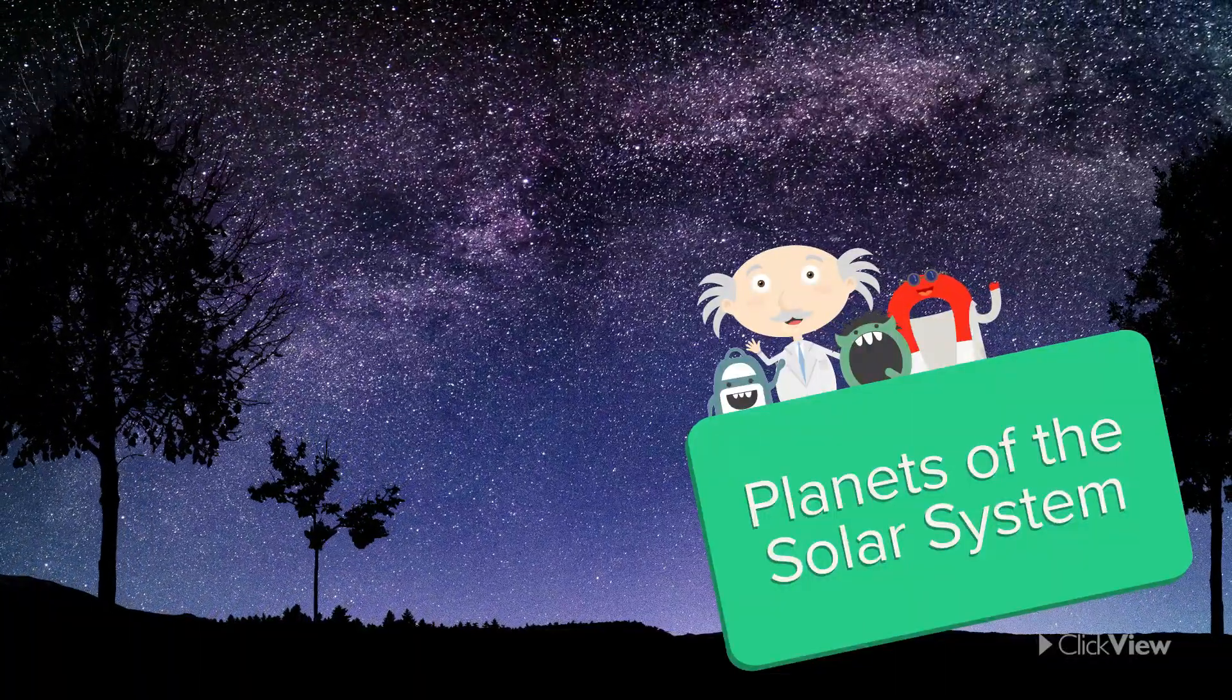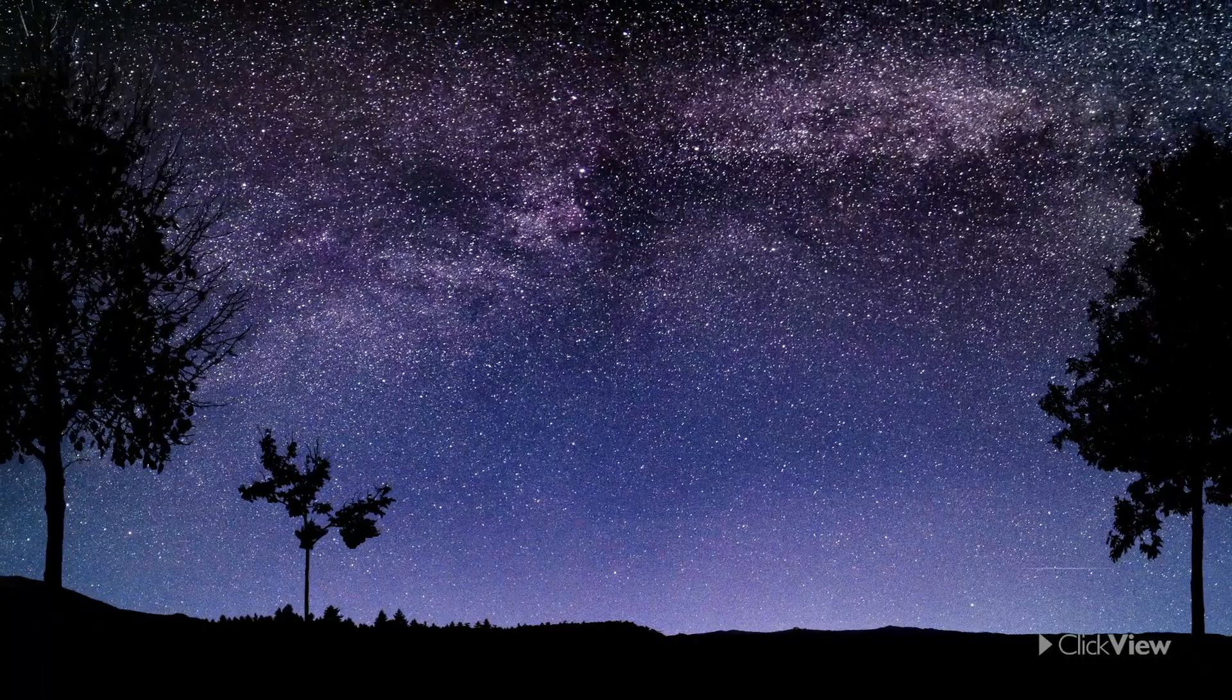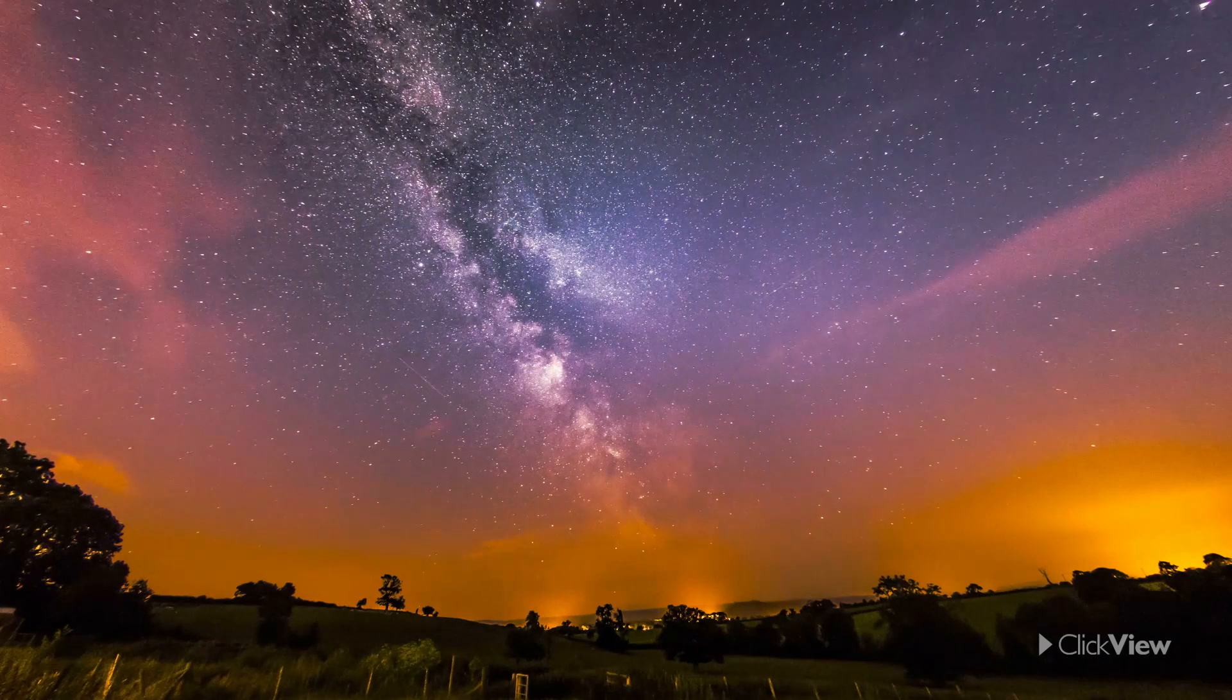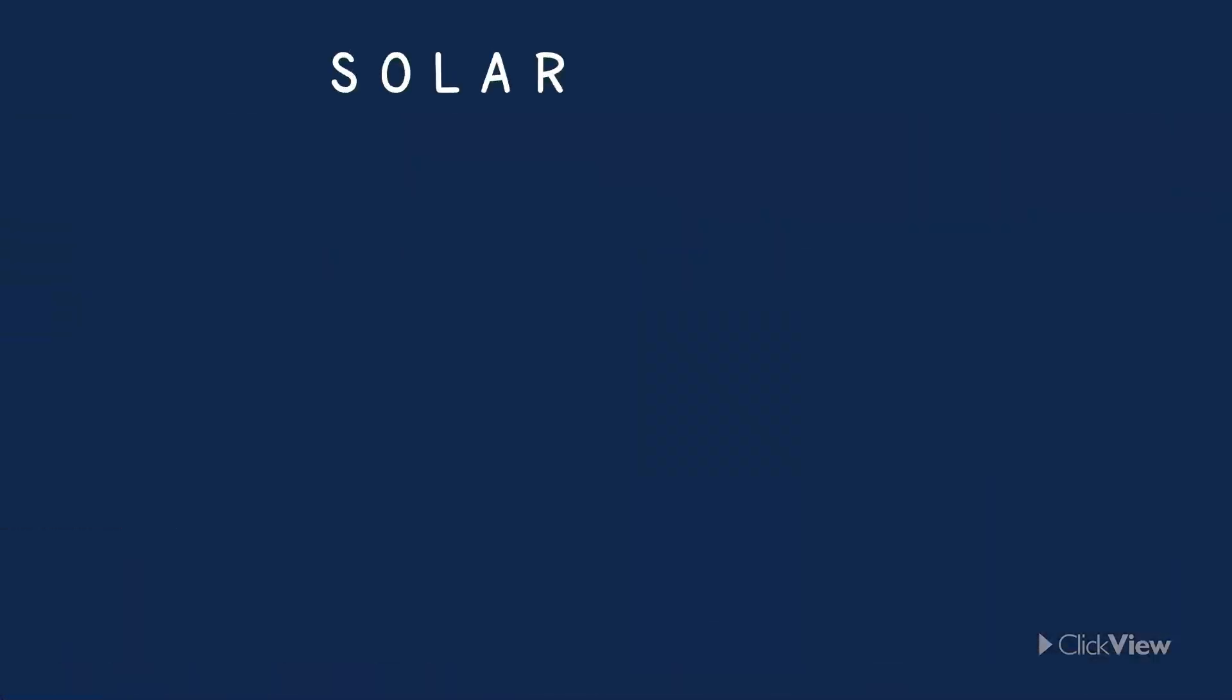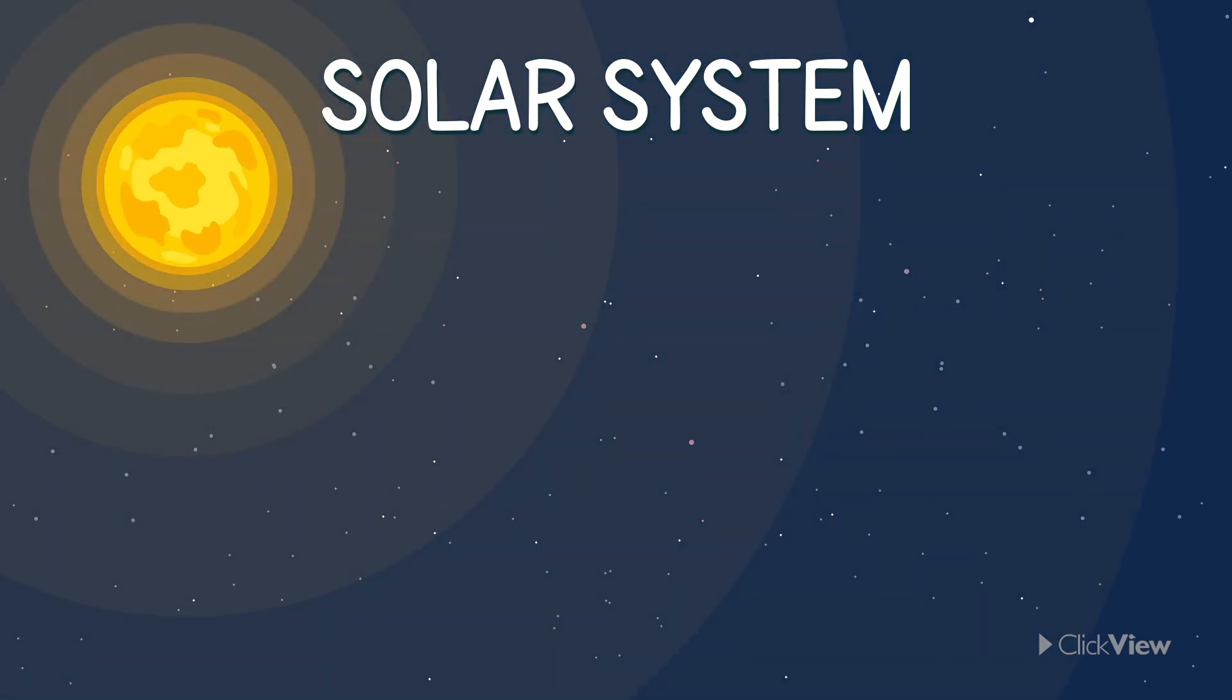When you look up at the night sky, do you ever think what else is there in the universe apart from the Sun, moon, and the stars? We are a part of the solar system. It comprises the Sun with eight planets and their moons orbiting around it.